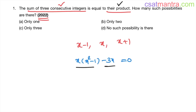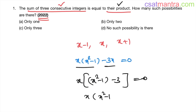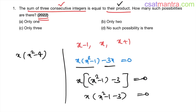Bringing all terms to one side: x(x²-1) - 3x = 0. Taking x as common from both terms: x·(x²-1-3) = 0, which gives x·(x²-4) = 0.